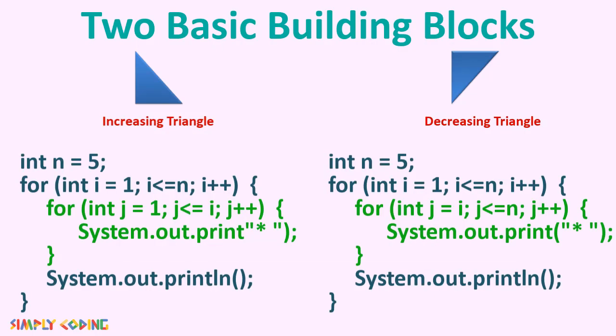We learned that we can make complex shapes by two basic shapes: increasing triangle and decreasing triangle. We can make any complex triangular pattern by just breaking it down to these two basic shapes.